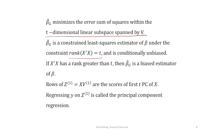The estimator β̂_G is conditionally unbiased, meaning it is unbiased as long as X'X has rank t. Not only is it unbiased in that case, it also minimizes the error sum of squares within the t-dimensional linear subspace spanned by V.